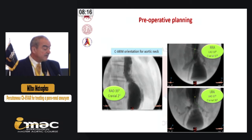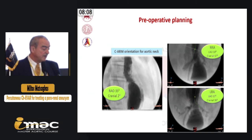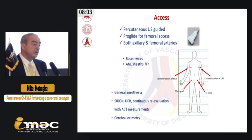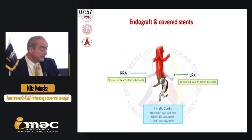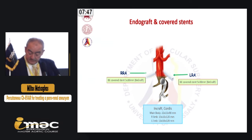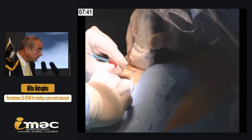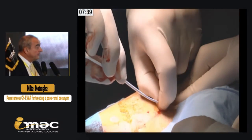This is the preoperative sizing and planning with the optimal C-arm orientation for the aortic neck and splanchnic vessels to catheterize. These are the access points, all under ultrasonographic guidance as we use in our department. These were the plans for the left and right renal arteries to be treated with 5-millimeter grafts — very small arteries — and the INCRAFT from Cordis. Now I can show you a small video of this procedure.